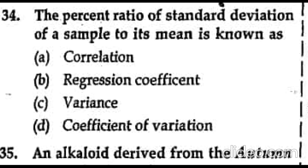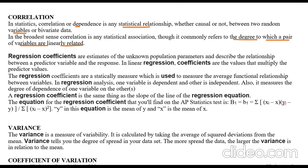Welcome, guys. We will discuss plant science question number 34. The question asks: the percent ratio of standard deviation of a sample to its mean is known as. The options given are correlation, regression coefficient, variance, and coefficient of variation. Since the question asks about percent ratio, let's see the explanation.